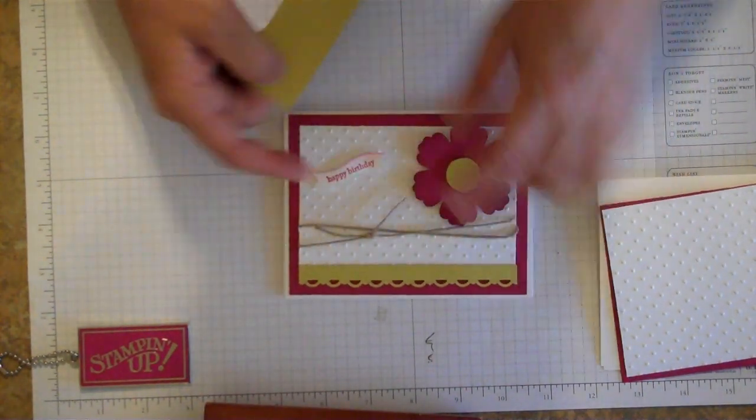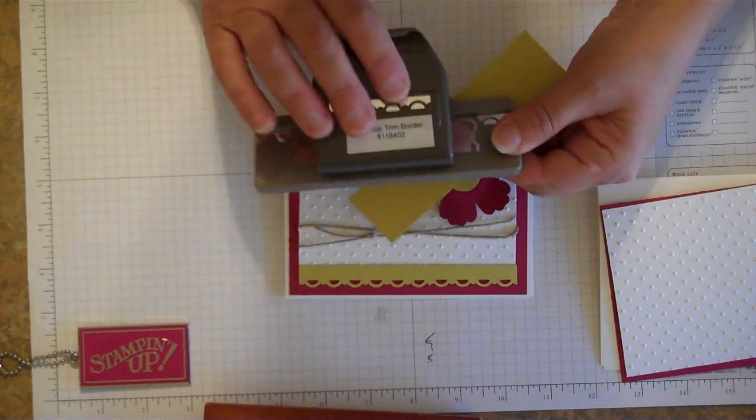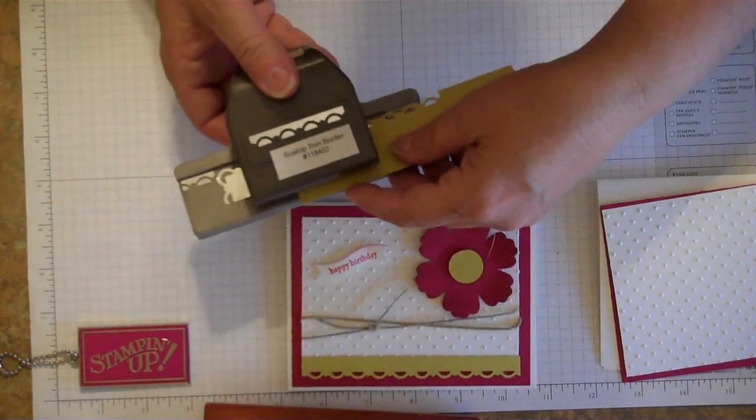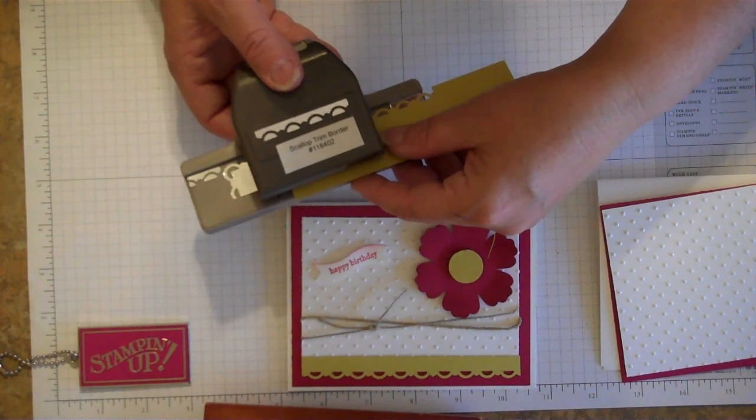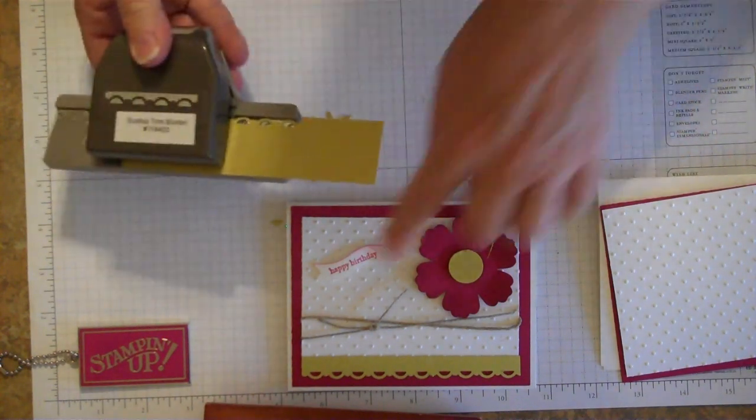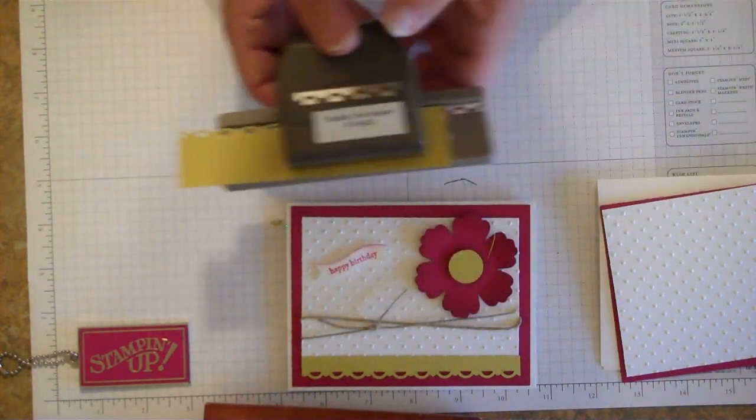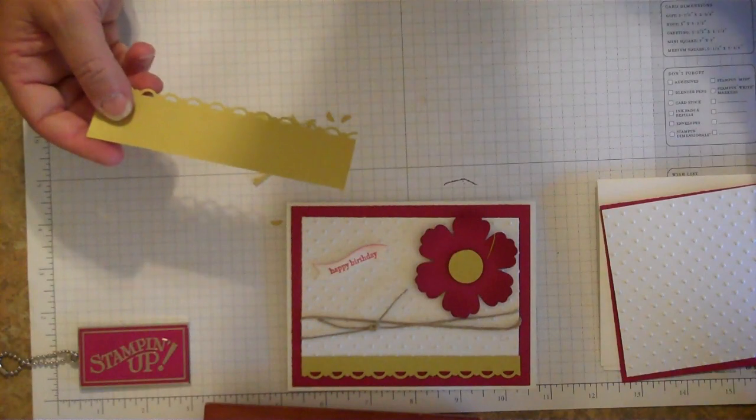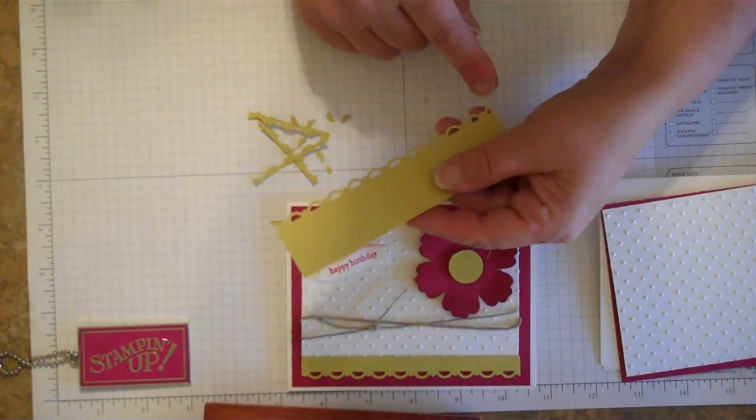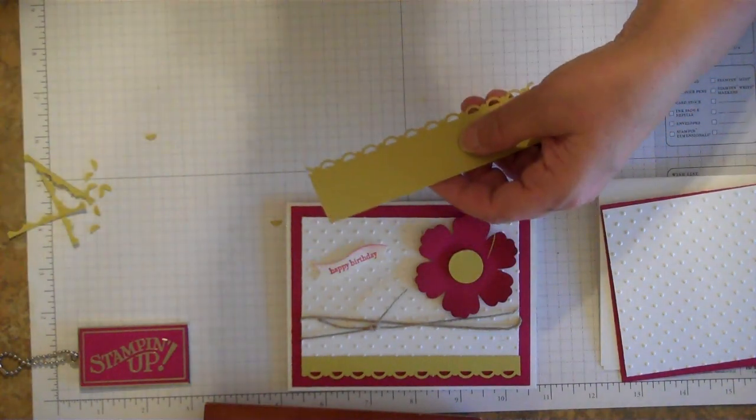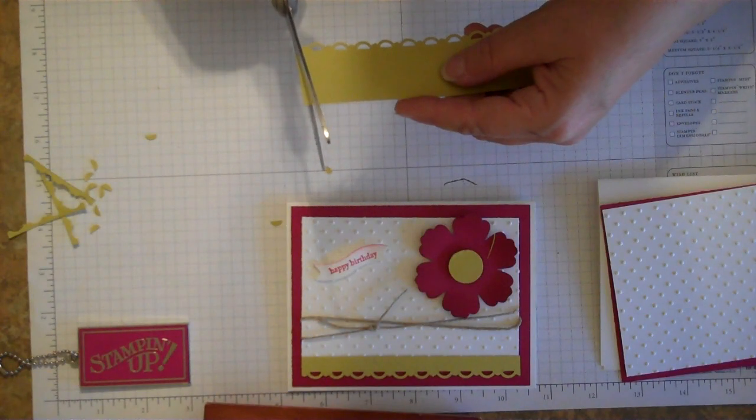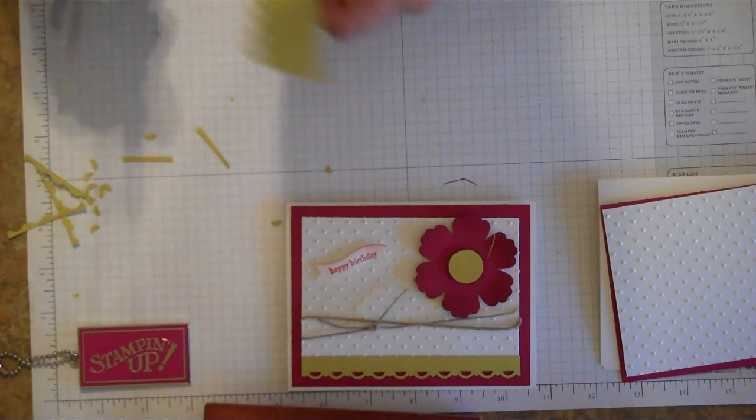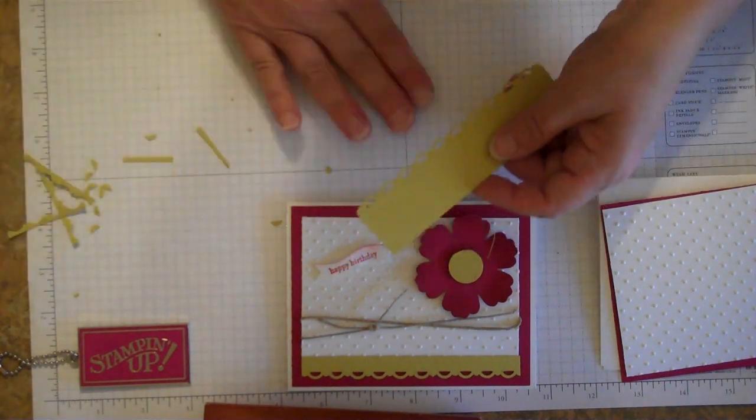The bottom scallop is called the Scallop Trim Border Punch and we're going to punch this out and get that ready to place onto our card. On this I always like to leave a little bit of extra length, so I actually made it about 5¼ inches just to give extra length so I can trim this at the scallops to get them more evenly placed. Sometimes you'll get like a half a scallop, so this way we can evenly trim that off so it's not quite as obvious. And it just gives the card a little bit more of a finished look.